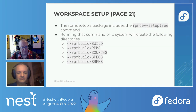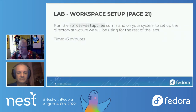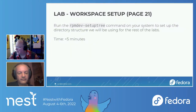During the prerequisite lab we installed RPMDevTools, which includes a command called RPMDev-SetupTree. When you run that on your system, it creates an RPM build directory with subdirectories: build, RPMs, sources, specs, and source RPMs. That is what we're going to do in this next short lab. Run that command on your target system — if it's not available, make sure the RPMDevTools package is installed.